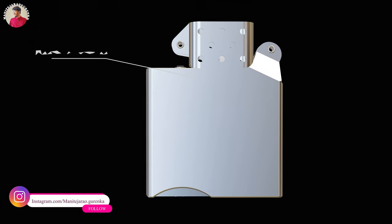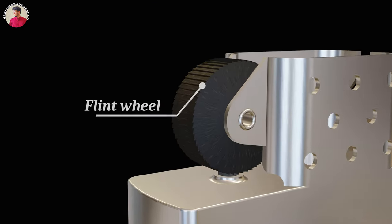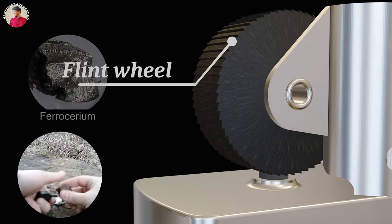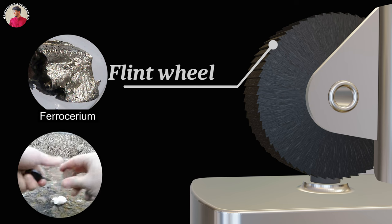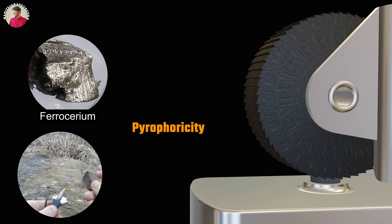This main inner cover case plays a crucial role in holding the flint wheel on top of the flint bar by fixing it with a flint wheel rivet. The flint wheel is made of ferrocerium, which gives off a large number of sparks when scraped against a rough surface. This phenomenon is called pyrophoricity.